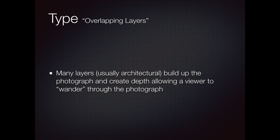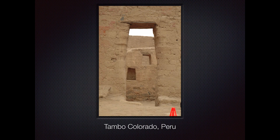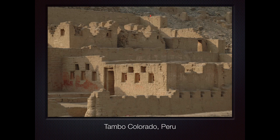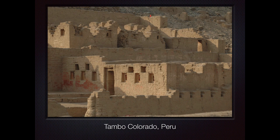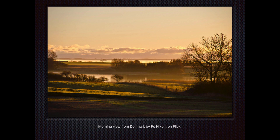Overlapping layers is another good strategy — using walls and doors in front that lead into the next, and the next, and the next. This was the site in Tambo Colorado, Peru that we spent three weeks documenting. There were a lot of doorways into windows, into rooms, and you can overlap the layers going backward to create that kind of composition. It has apparently some of the most well-preserved wall paintings left.